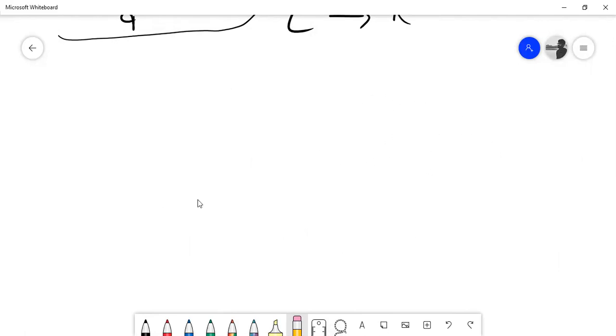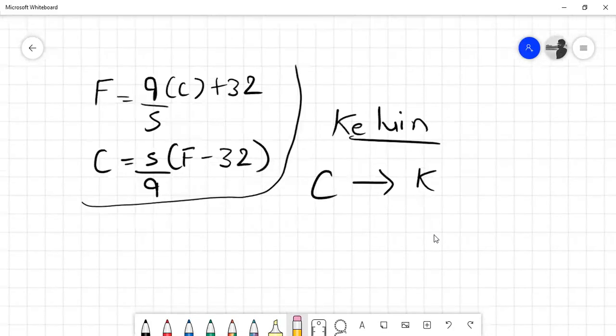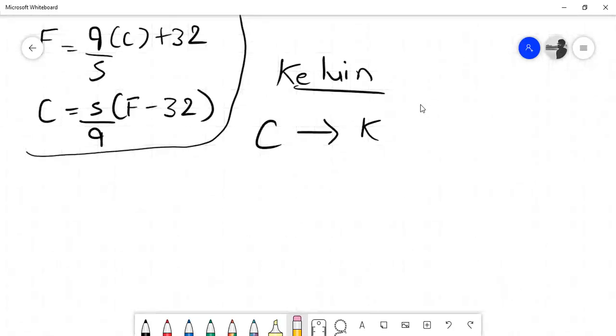So basically we have Celsius into Kelvin and we have two formulas. If you want K, then your K is equal to C plus 273, okay? And if you want C, then C is equal to K minus 273. These are the two formulas that you should remember.